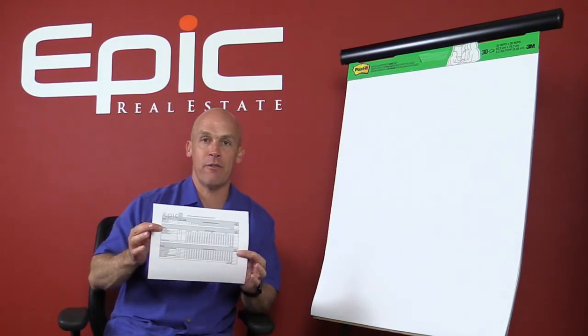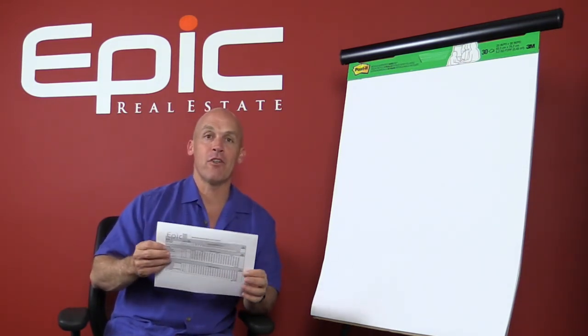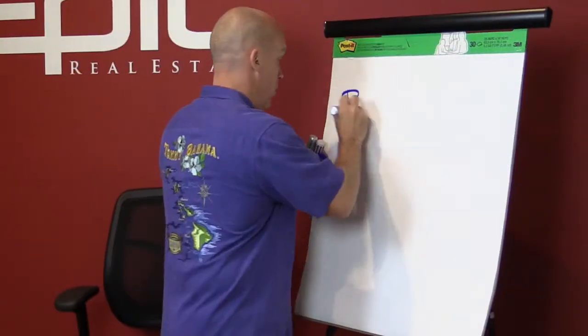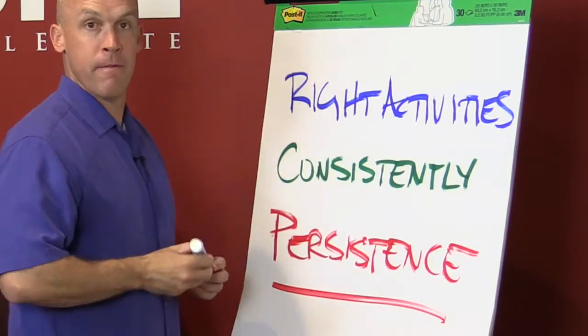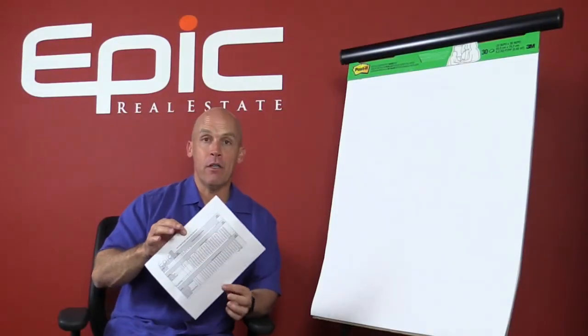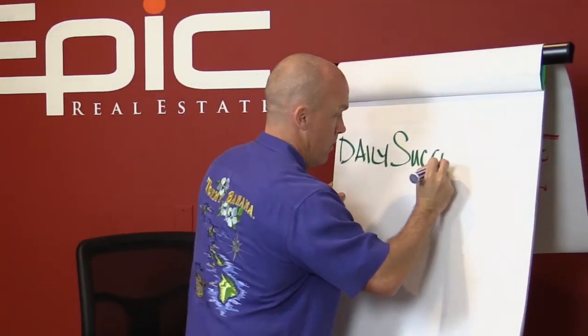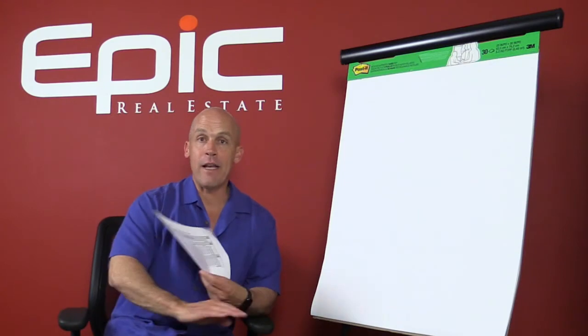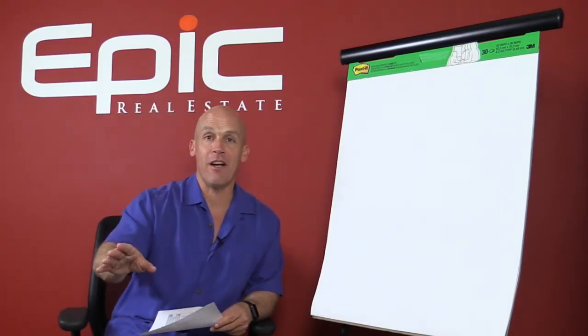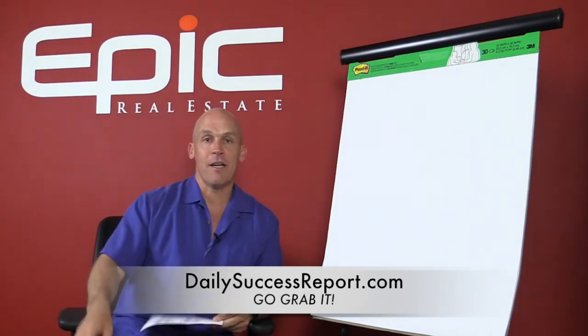This right here, this is the daily success report. It's the epic way. It's what keeps epic investors in the academy working the right activities, working them consistently and with persistence. Now, if you'd like a copy, you can rip off ours. You have our permission and you can use it in your market. So go to dailysuccessreport.com. Pick up a copy for free. It's the greatest gift you're going to receive all day, maybe all year. Dailysuccessreport.com. Go grab this and I will see you next time. Take care.